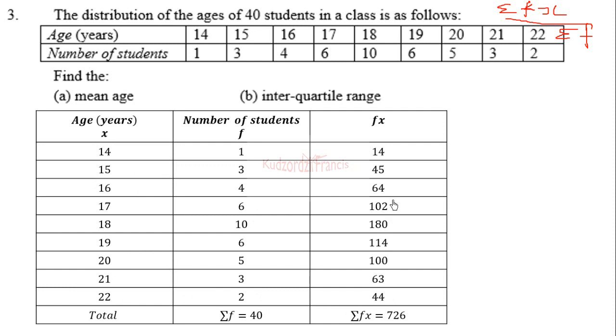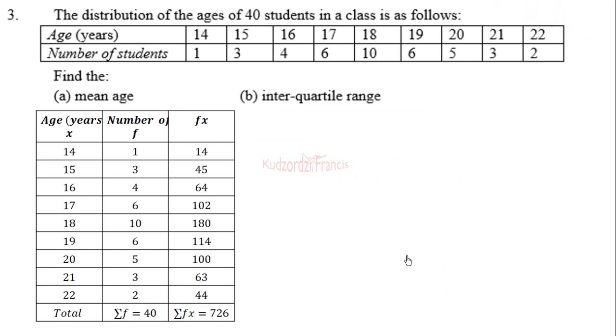You take your time to add them, the total. Then the next thing you have to do now is to calculate the mean age using the formula X̄ = Σfx / Σf.